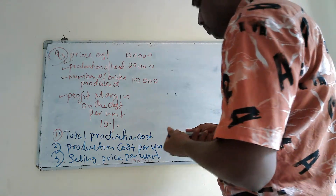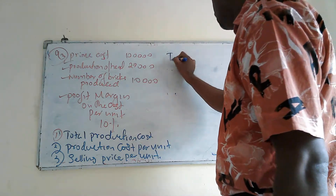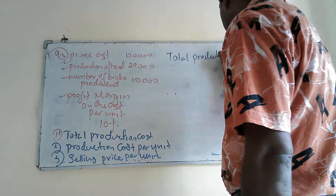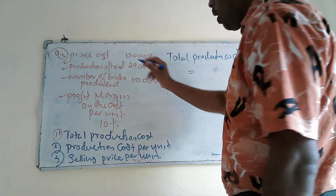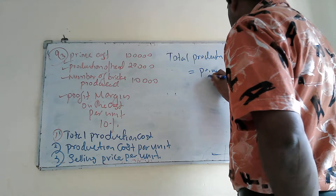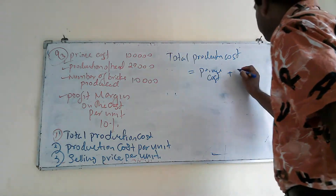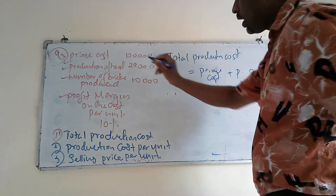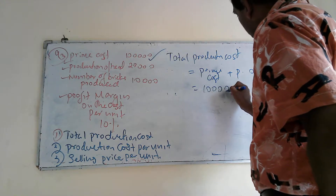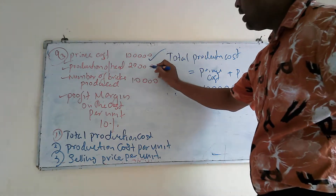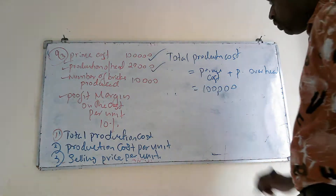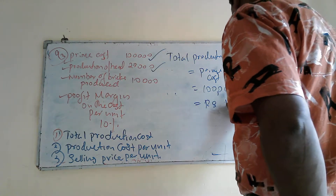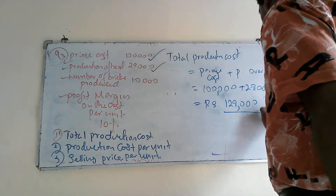The first part is total production cost. Total production cost equals prime cost plus production overhead. We are given prime cost 100,000 and production overhead 20,000, so the total will be 120,000.